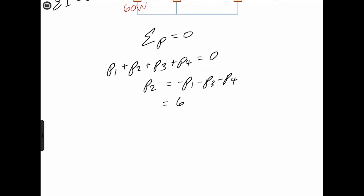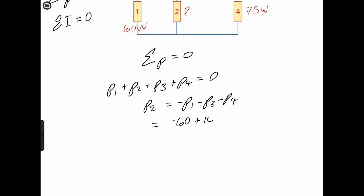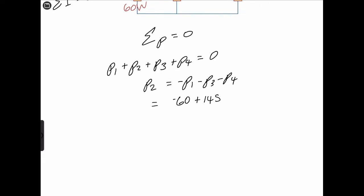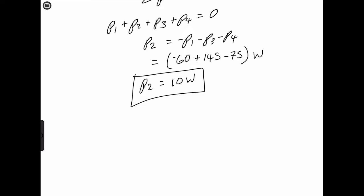P1 is 60 watts, so that's negative 60 watts. Negative P3 — P3 is negative 145 — so that's plus 145. Negative P4 is negative 75 watts. So we see that P2 is equal to 10 watts. Adding everything up, the algebraic sum of the power in the circuit is equal to zero, which obeys the conservation of energy.